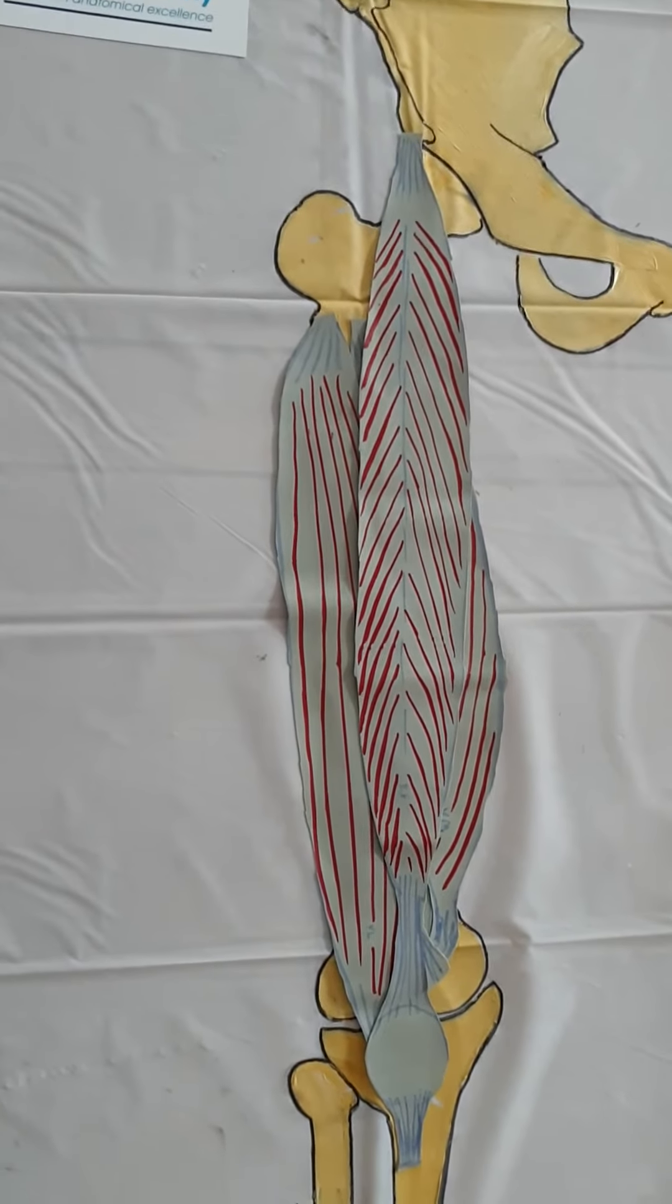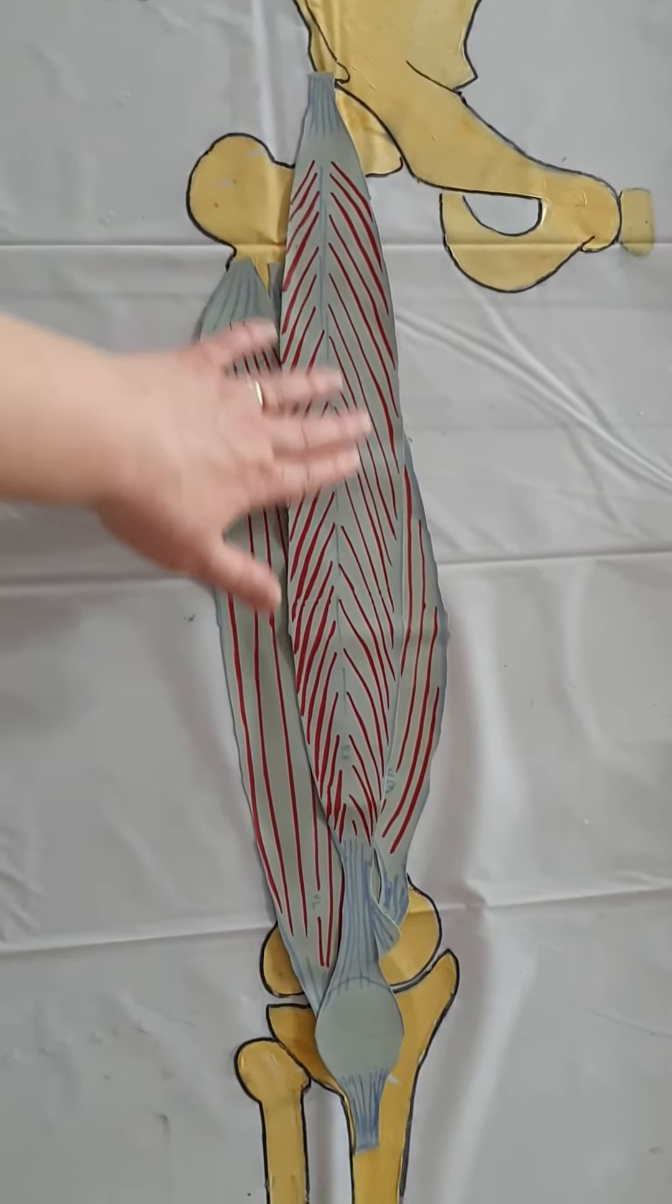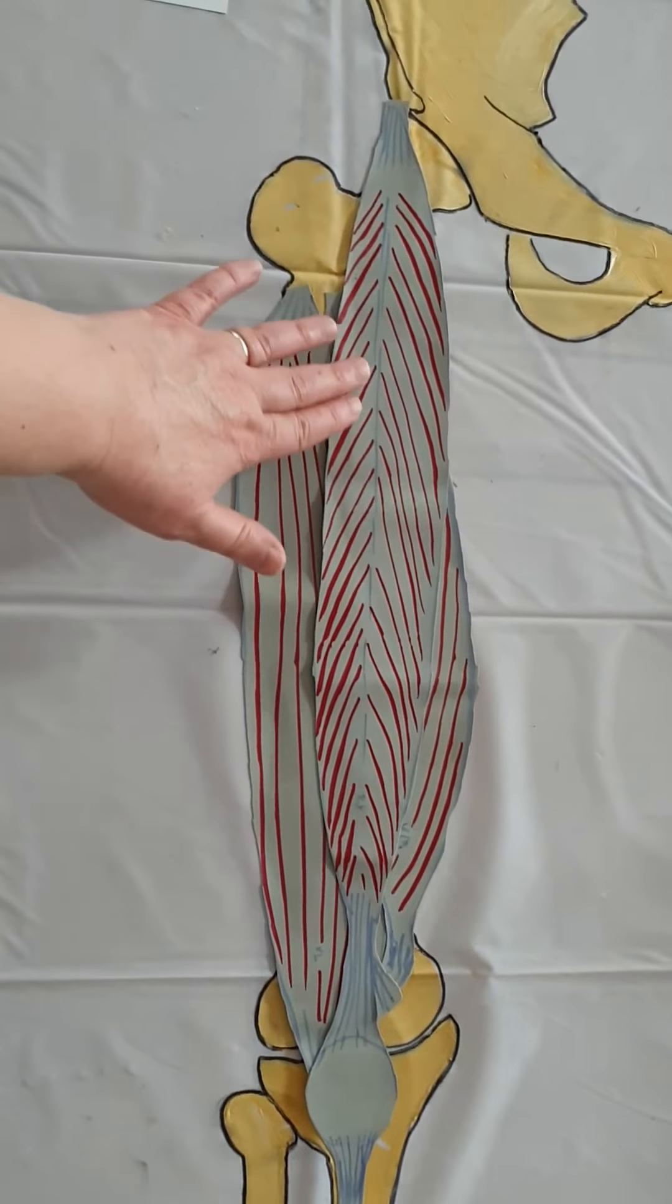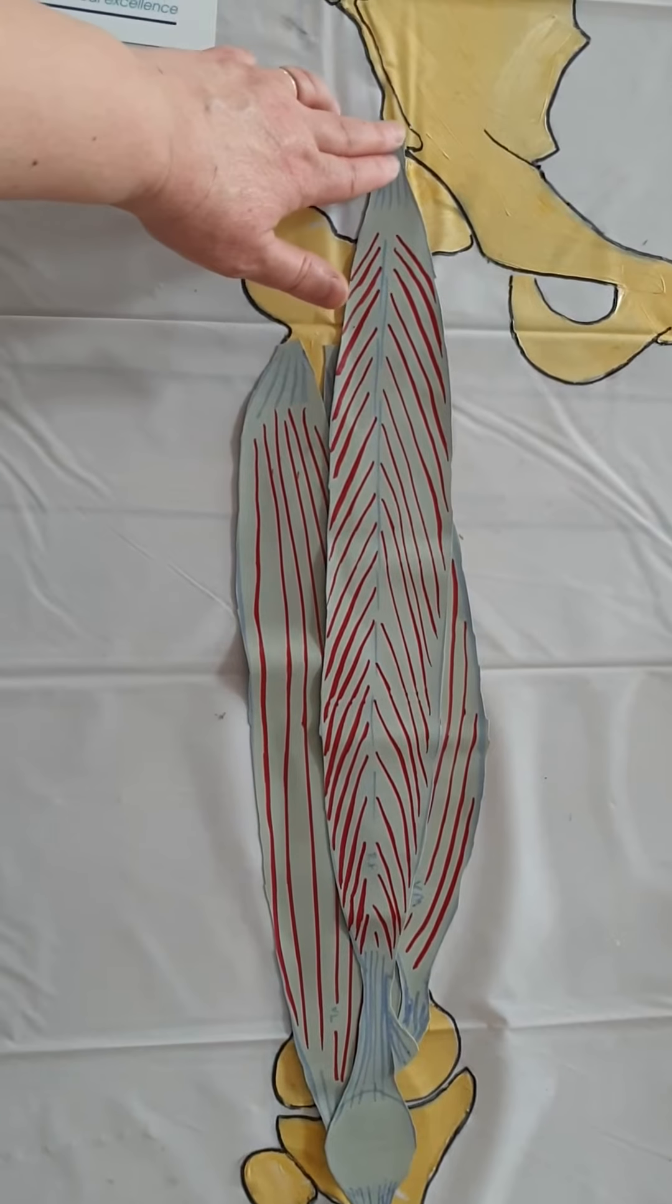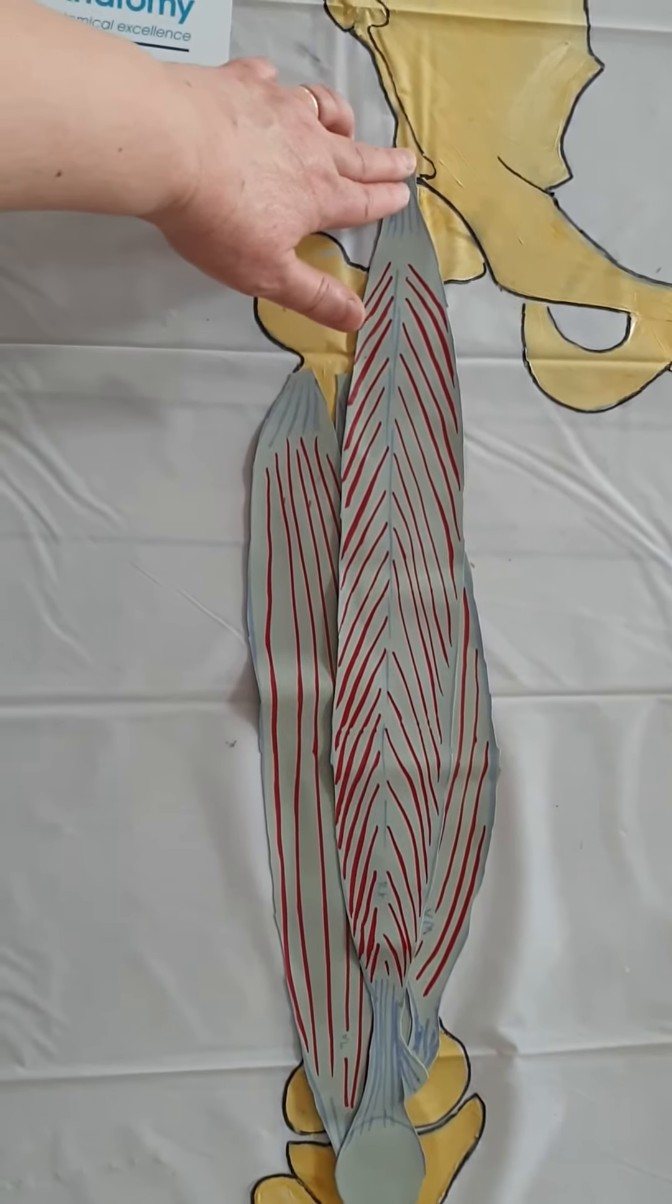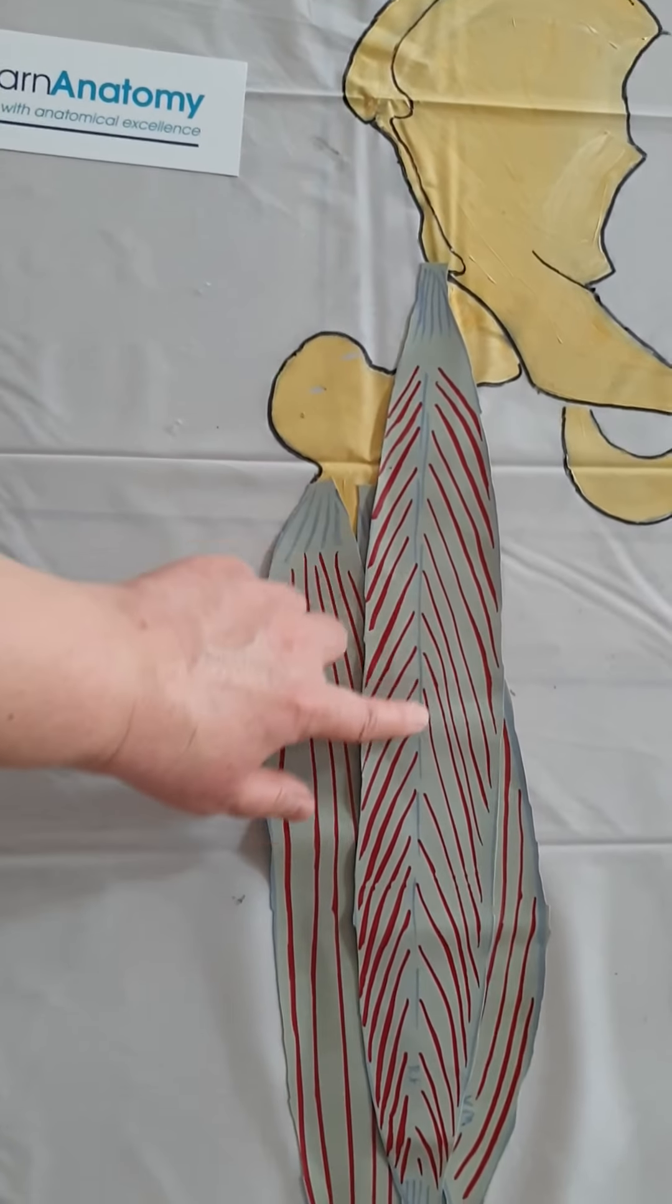On the front here, I've got the rectus femoris muscle, and in its origin up here, it attaches to the anterior inferior iliac spine. So here's my iliac spine—this will be the inferior part of the anterior portion there. And you can see that the muscle is shaped a bit like a feather, a pennate muscle, with that feathering effect there.